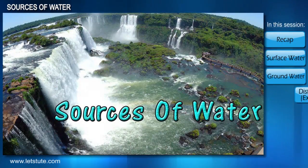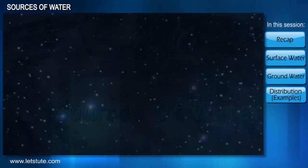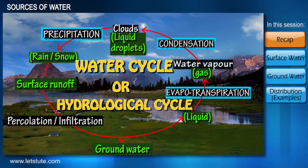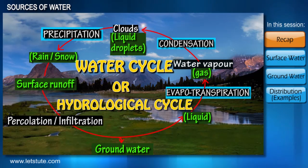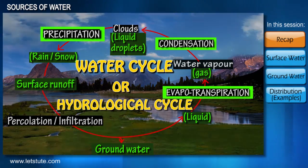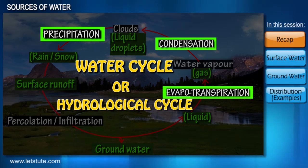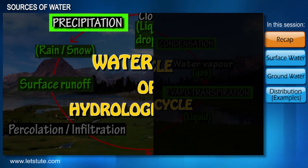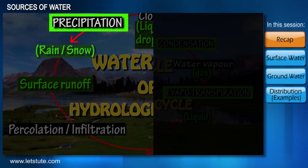Sources of water. Friends, in our previous session we had studied about the hydrological cycle or water cycle. We had said that evapotranspiration, condensation, and precipitation are the three main parts of the water cycle, where precipitation happens to be the main source of water for the earth — this rain and snow that falls on the earth.